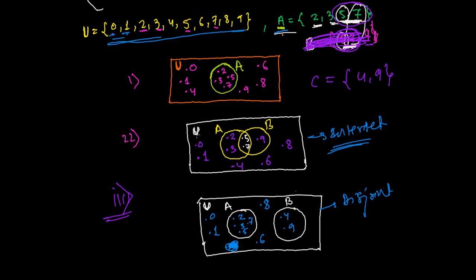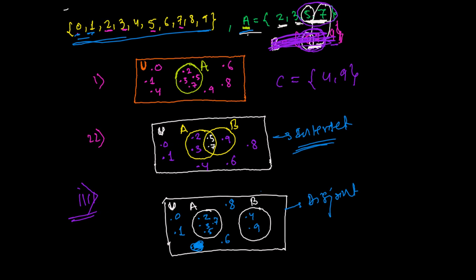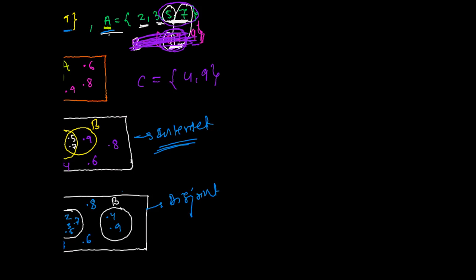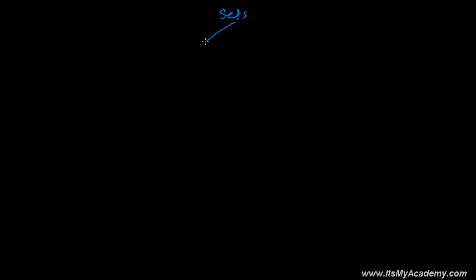As I have already mentioned in the previous video, we will be learning what intersecting sets and disjoint sets are. These are two types of sets we need to learn, and it is very important to represent them in the Venn diagram. Sets, while representing in the Venn diagram, may be of two types: disjoint sets and intersecting sets.